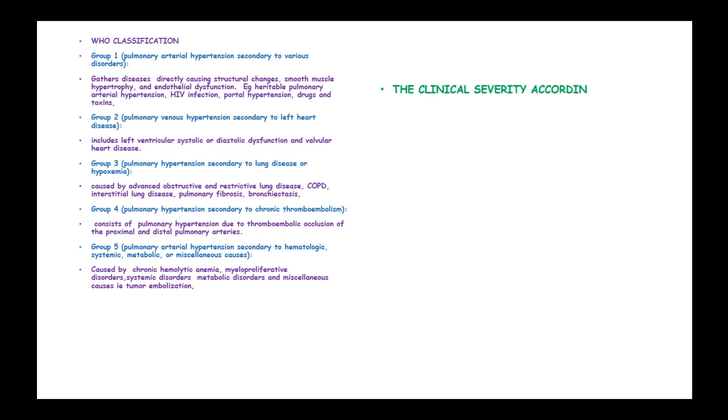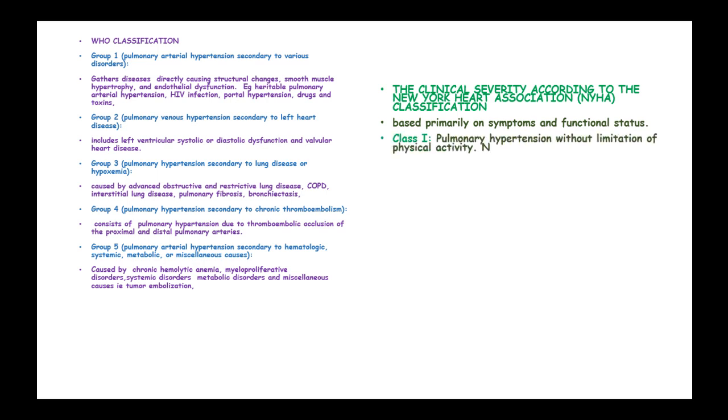Clinical severity can be classified according to the New York Heart Association into four classes based on symptoms and functional status. Class 1 is pulmonary hypertension without limitation of physical activity, with no dyspnea, fatigue, chest pain, or near-syncope with exertion.